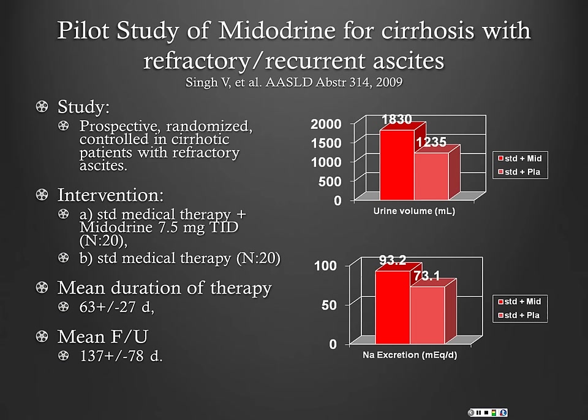This is a pilot study on midodrine for cirrhosis with refractory or recurrent ascites. They studied urine volume and sodium excretion, both of which increased after midodrine administration. This is at a fairly low dose — we usually start at about 10 mg and go up to 20 mg TID on our service.